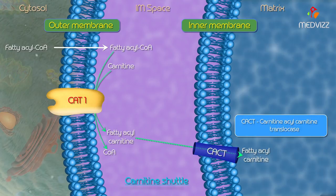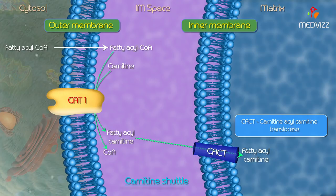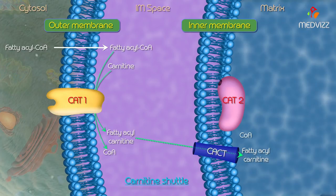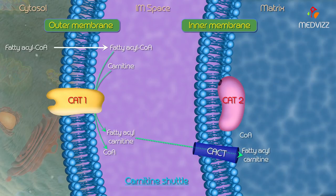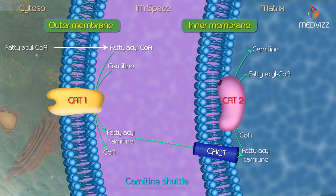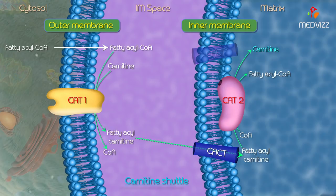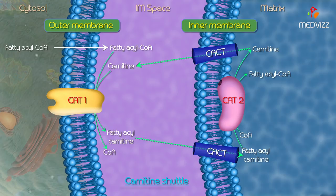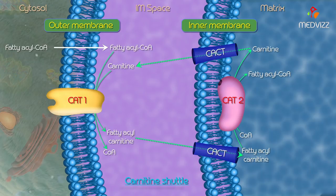The fatty acyl carnitine formed is translocated into the mitochondrial matrix by carnitine acyl carnitine translocase, the carrier protein present in the inner mitochondrial membrane. The enzyme carnitine acyl transferase 2 (CAT2), present on the inner surface of the inner mitochondrial membrane, liberates fatty acyl CoA and carnitine to complete the shuttle. The carnitine is sent back outside by the carnitine acyl carnitine translocase and the cycle begins.